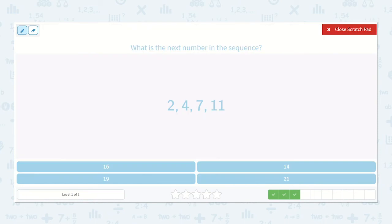What is the next number in the sequence? We have 2, 4, 7, 11. So from 2 to 4, I know that is 2. From 4 to 7, I know that is 3. So we have 3, 7 to 11, well, 7 to 10 would be 3, so 7 to 11 must be 4.